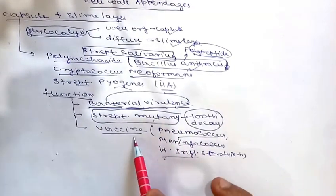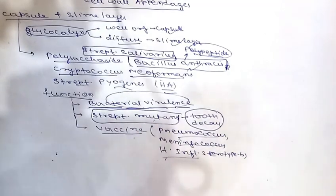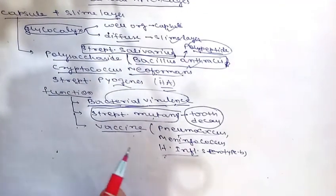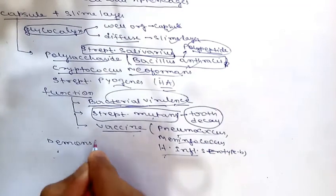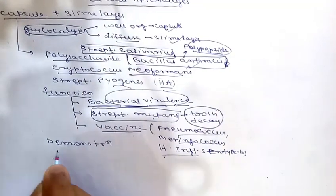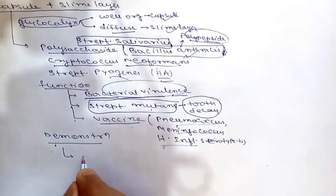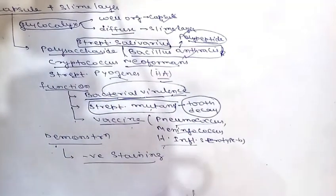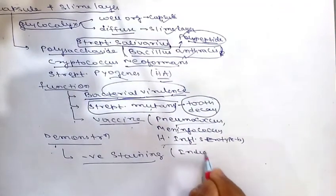So the three main functions of capsule are: contributing to bacterial virulence, acting as a source of nutrient energy (as seen with Streptococcus mutans), and serving as vaccine antigens. Capsule can be demonstrated by various methods — the first is negative staining.